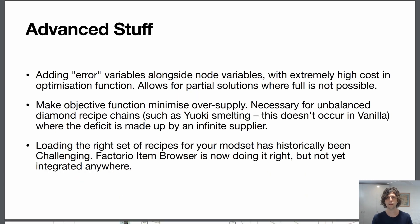Some advanced stuff. A relatively typical technique in linear programming is that you can add an error variable alongside node variables. So you give it extremely high cost in the optimization function. So if there's an actual solution, it will always be zero. But if there's a partial solution available, this lets the solver find it without just giving you a hard fail.